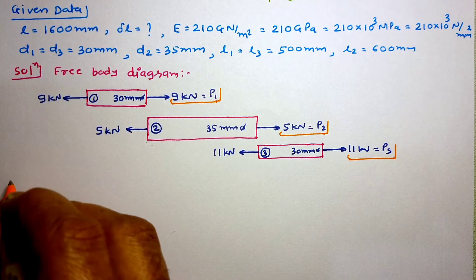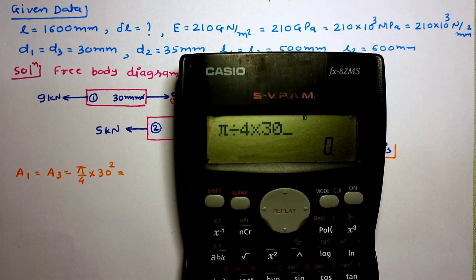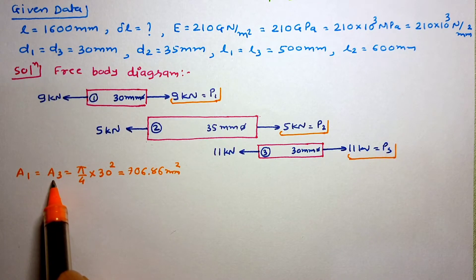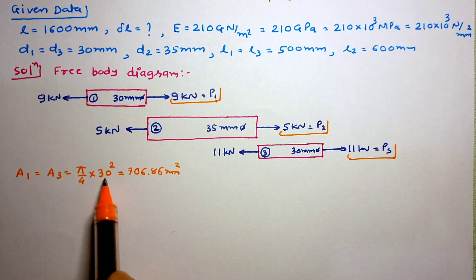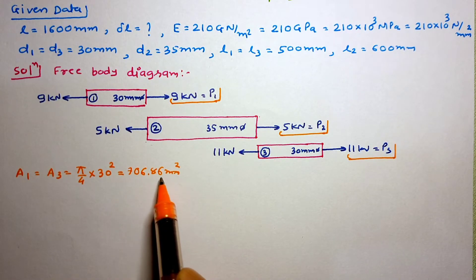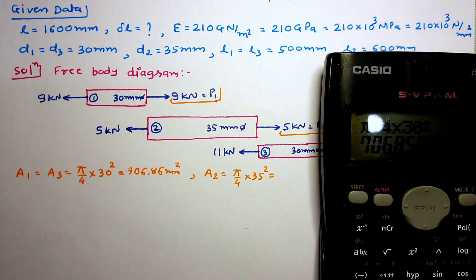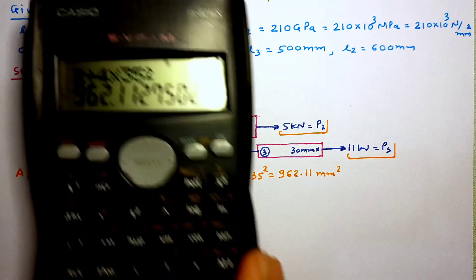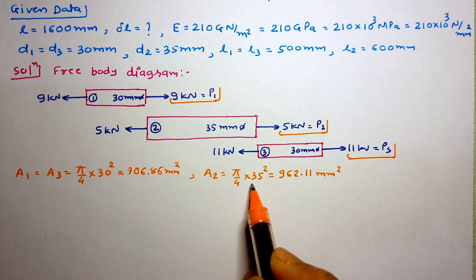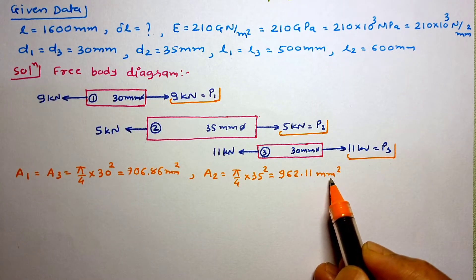Now let us work out the area of all three sections. We know the equation for area is π/4 × D². For Section 1 and 3 with diameter 30 mm: A1 = A3 = π/4 × 30² = 706.86 mm². For Section 2 with diameter 35 mm: A2 = π/4 × 35² = 962.11 mm².